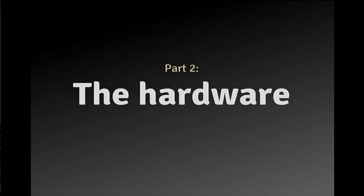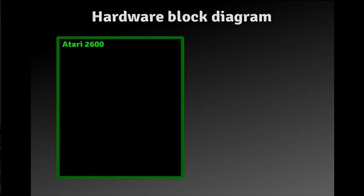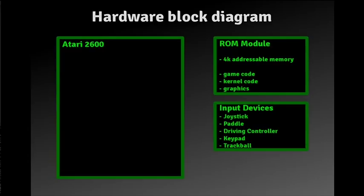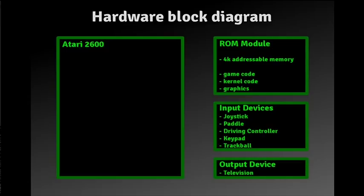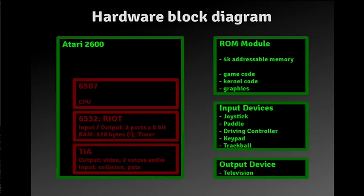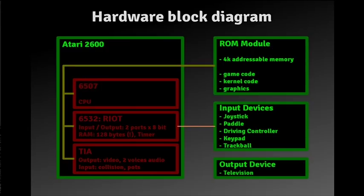Let's take a look at the hardware. This is the block diagram. We've got the Atari and the ROM module that contains all the code — there's no firmware in the Atari itself; the Atari is dumb. We've got input devices like joysticks and paddles, and the output device — the television. Inside the Atari we have the 6507 CPU, a chip containing RAM, IO ports and a timer, and the Television Interface Adapter. These are all connected through a CPU bus. Input devices connect to the RIOT and some also to the TIA for analog inputs, and the TIA outputs to the television.